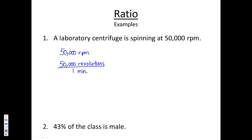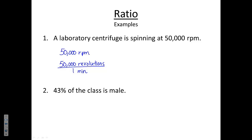Another example: 43% of the class is male. Remembering what percent means — percent means out of 100 — I can change 43% to a fraction by writing it as 43 over 100. What do those two numbers really represent? 43 represents the number of males, so for every 43 males in the class, the 100 represents the total number of students. We're comparing the males in the class to the total number of students.